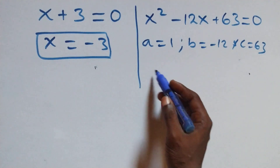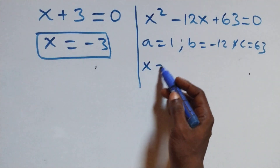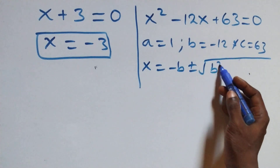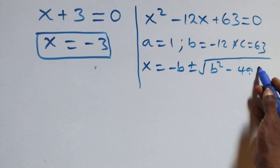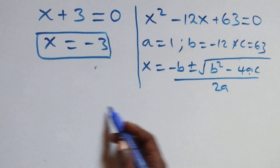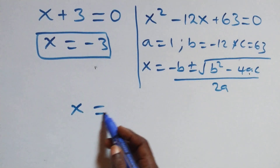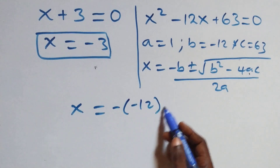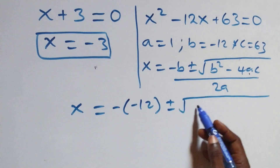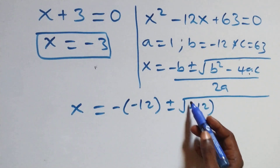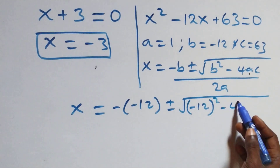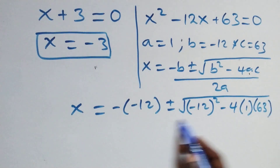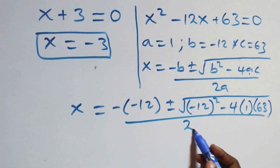Applying the quadratic formula: x equals minus b plus or minus square root of b squared minus 4ac, all over 2a. Substituting: x equals minus (minus 12) plus or minus square root of (minus 12) squared minus 4 times 1 times 63, all over 2 times 1.